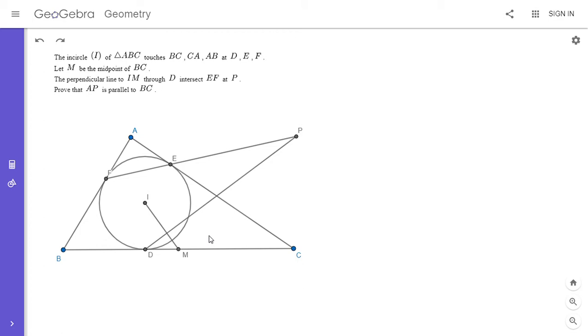So the first thing I noticed is since P lies on EF, P is on the polar of A, because the line connecting the two tangents from A to the incircle, so the line EF is the polar of A from my video 75 on my channel.